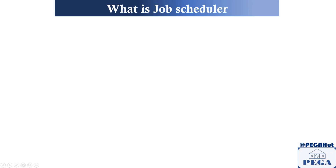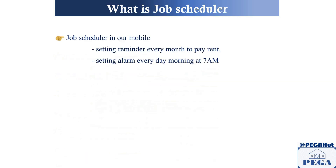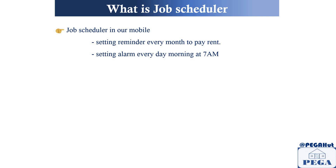Before I proceed, the first thing I'd like to ask is: what is a job scheduler? As you know, the name itself indicates that you are scheduling a job — that means a human would not do it, it's an automated job. We use job schedulers day-to-day in our lives. For example, setting a reminder every month to pay rent — you are using a job scheduler where you set it once and the system reminds you. Similarly, setting an alarm to wake up every day at 7.